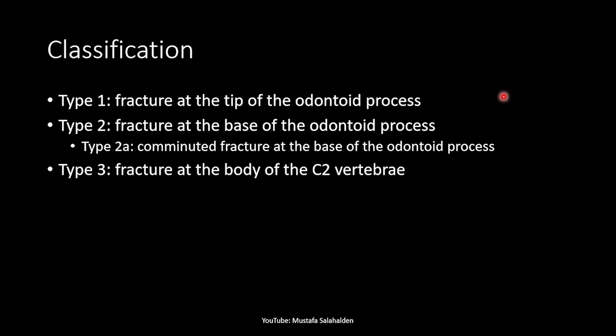The types are based on the fracture level or fracture line. Type 1 is a fracture at the tip of the odontoid process. Type 2 is a fracture at the base of the odontoid process. Type 2a is also at the base but is a comminuted fracture. Type 3 is at the body of the C2 vertebrae.